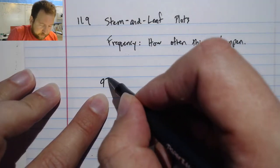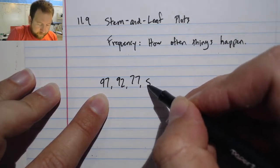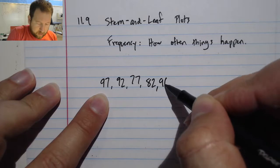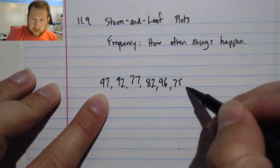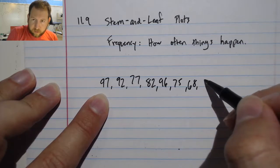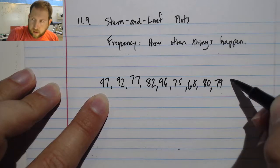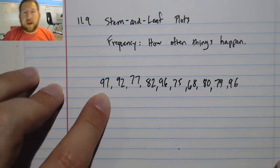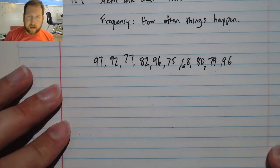So I have 97, 92, 77, 82, 96, 75, 68, 80, 79, and 96. And I want to look at how they are distributed amongst the grade spectrum.